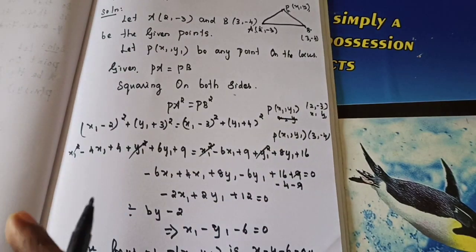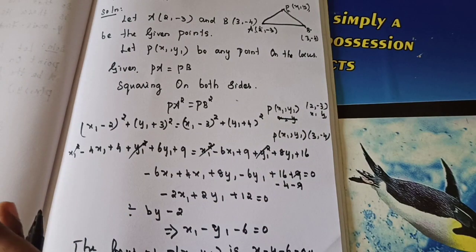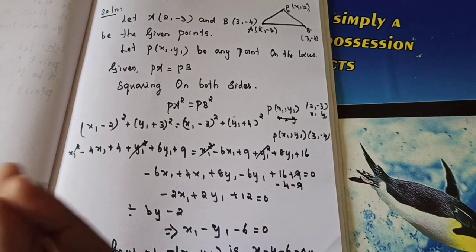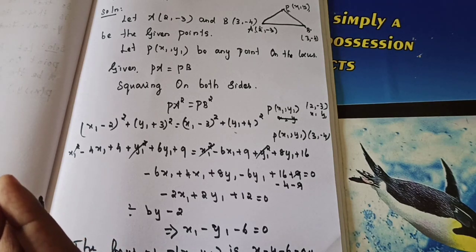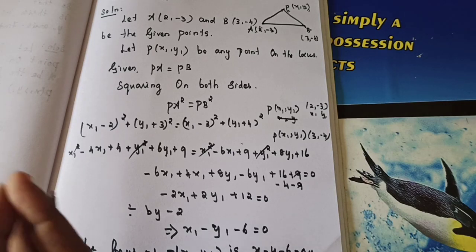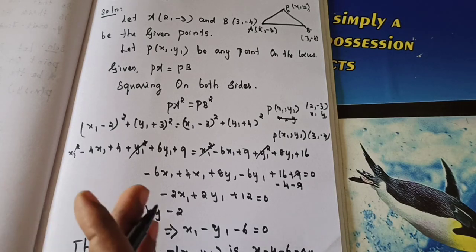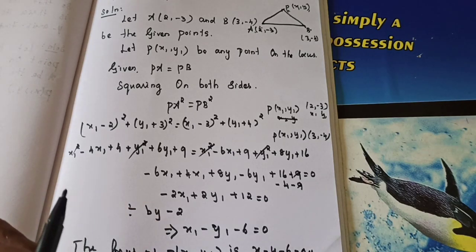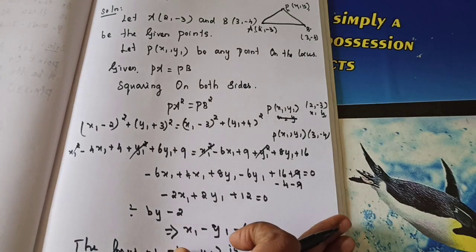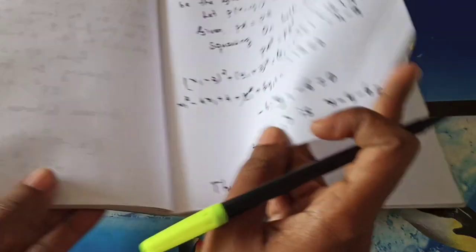Equidistance means equal distance. So PA = PB. From that you apply the distance formula, square it first, substitute, and simplify. At last, replace x₁, y₁ with x, y. I hope you got a good idea. Let's move to the next problem.